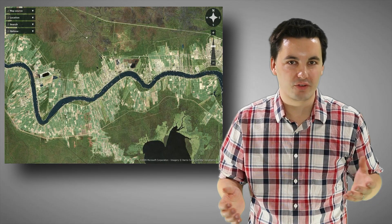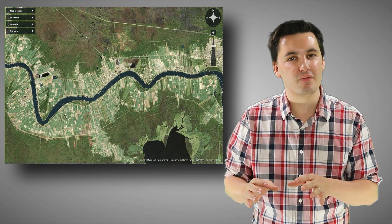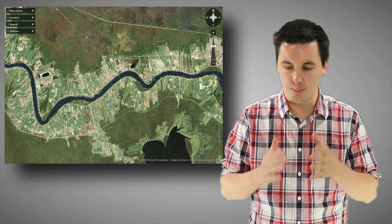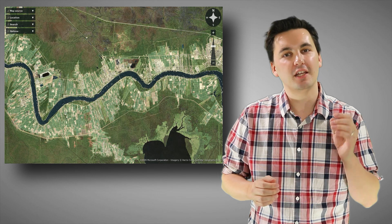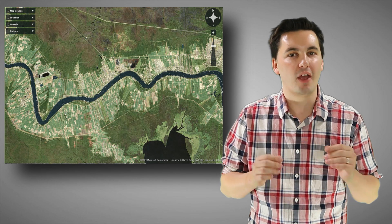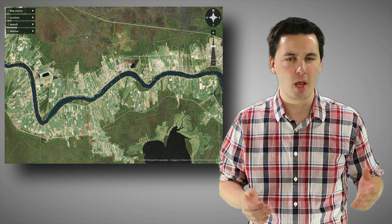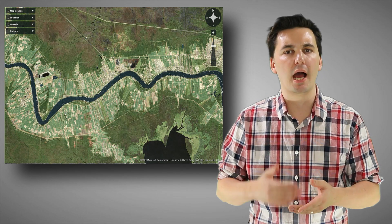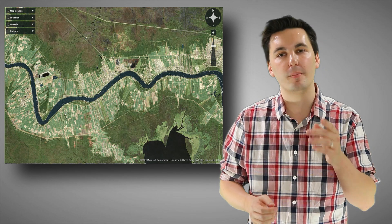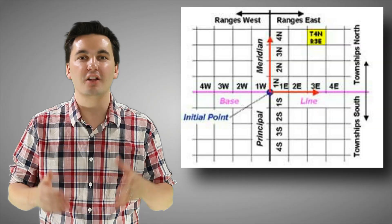The next survey method is long lots. Here land is divided up into narrow parcels and each parcel has access to a transportation system, whether it be a canal, a river, or a major roadway.